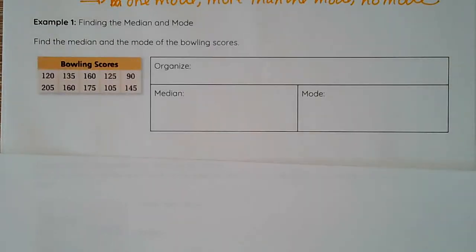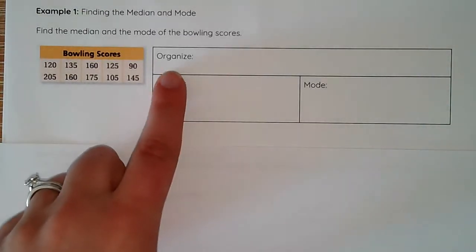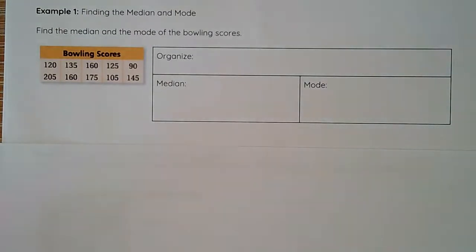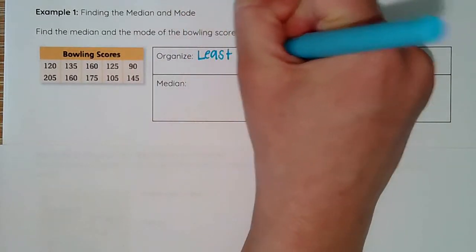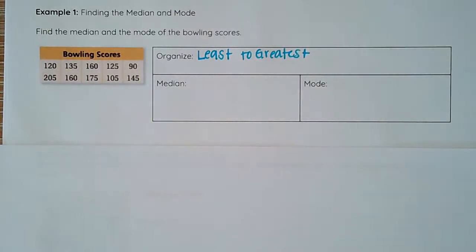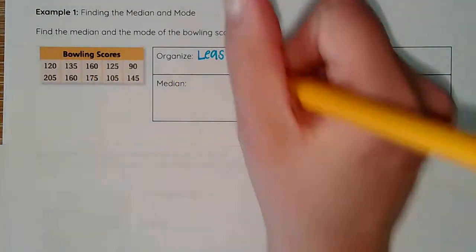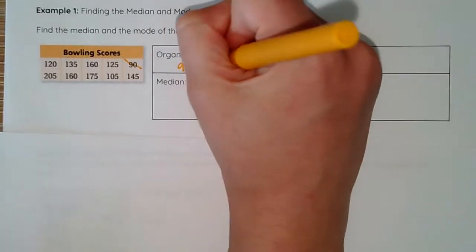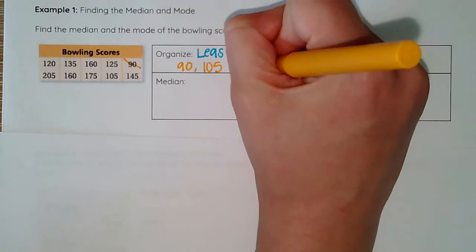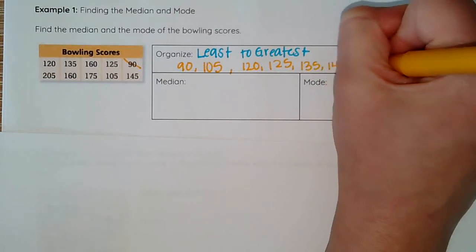Let's go ahead and dive into our median and mode. When I am finding my median and mode, I want to make sure that I always organize my data from least to greatest to help me get started. We've got a set of bowling scores and I need to order those from least to greatest. Here my lowest score is 90. Sometimes it helps to cross them off as I go. 90, 105, 120, 125, 135, 145, 160.